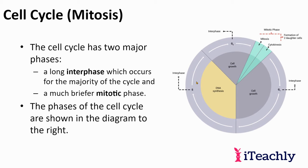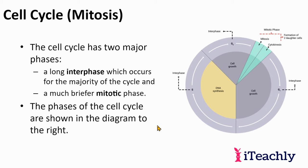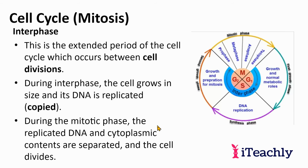The cell cycle has two major phases. You have mitosis and cytokinesis as one phase. The other phase is interphase, which is really preparing the cell to go into mitosis. Interphase is where the cell spends most of its time, and it occurs between cell divisions.